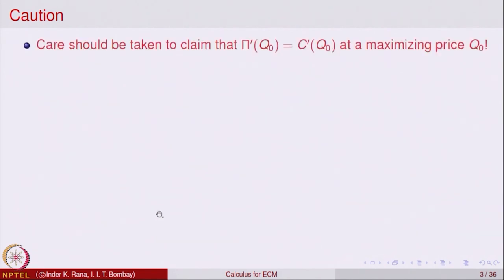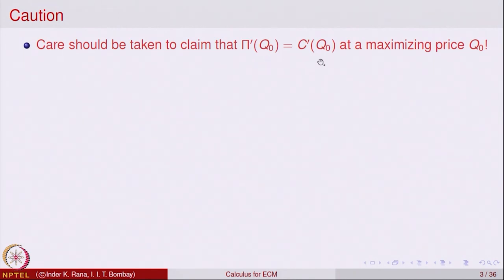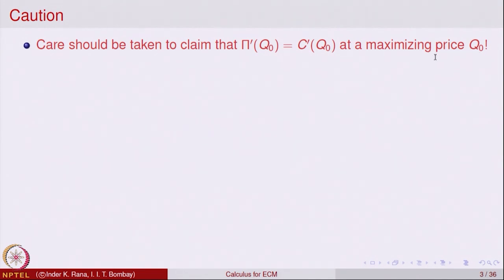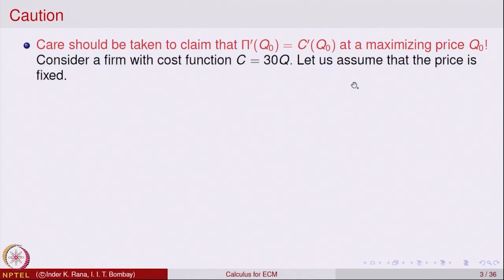Today we would like to give a caution: care should be taken before claiming that, for example, the derivative of the profit — the marginal of profit — equals the marginal of cost at a maximizing quantity Q0. Before verifying such a relation, one should ensure that Q0 is indeed a point of maxima for the function; otherwise this may not be true.